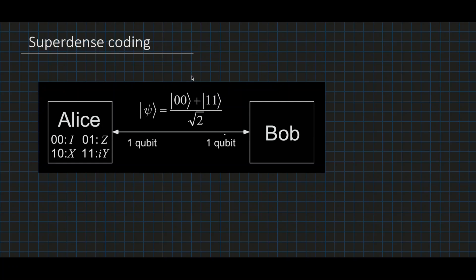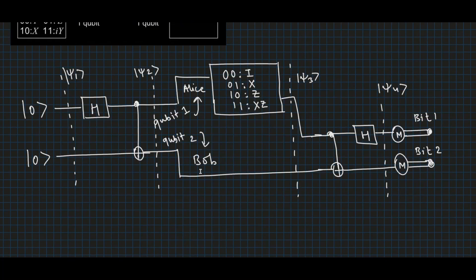Superdense coding is a simple application of elementary quantum mechanics. It involves two parties named Alice and Bob who are far away from one another, and their goal is to transmit some classical information from Alice to Bob. Initially, Alice and Bob both share one half of a Bell state given by (|00⟩ + |11⟩)/√2, and Alice can use superdense coding to transmit two classical bits of information to Bob using only a single qubit. Let's see how Alice and Bob achieve this task using this quantum circuit.